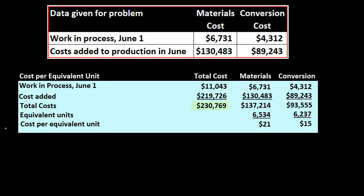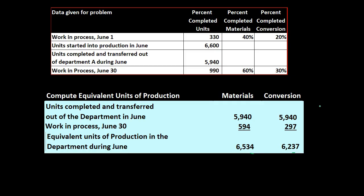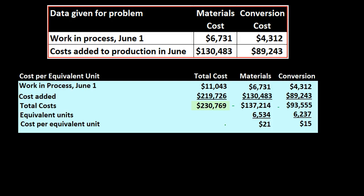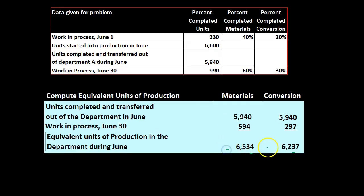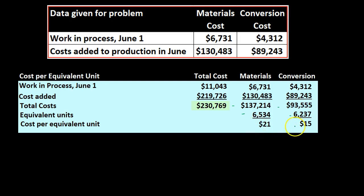Then we had the cost per equivalent unit, where we took the total dollar amount. We had the work in process at the beginning dollar amount and then the costs added during the period. We take these total dollar amounts and apply them to the units completed and transferred out and the units still in work in process. Dividing by the total equivalent units gave us $21 and $15.